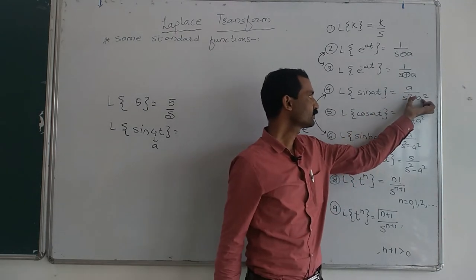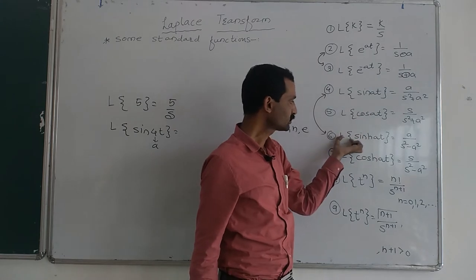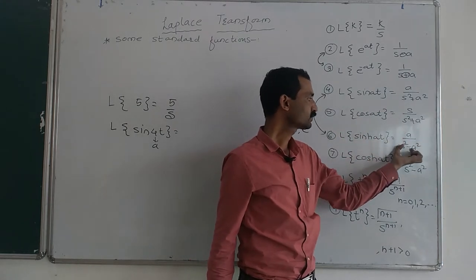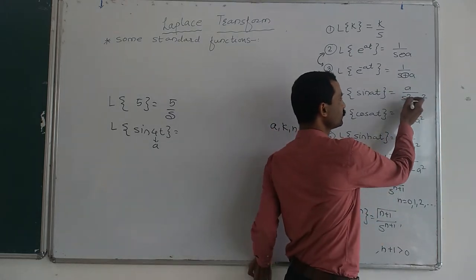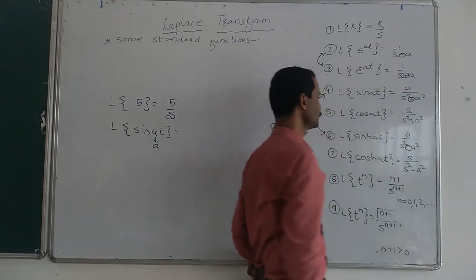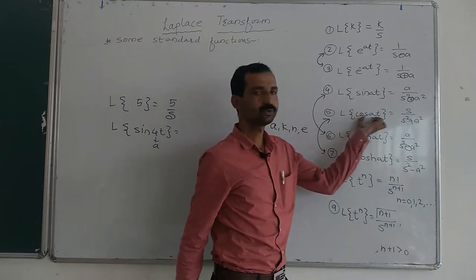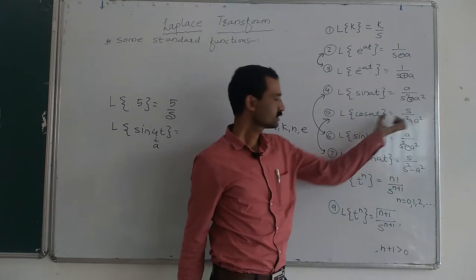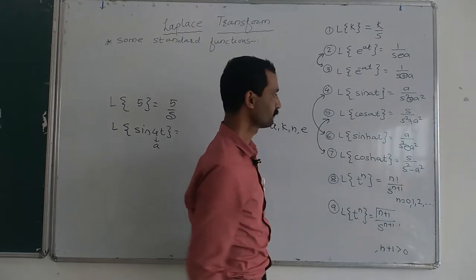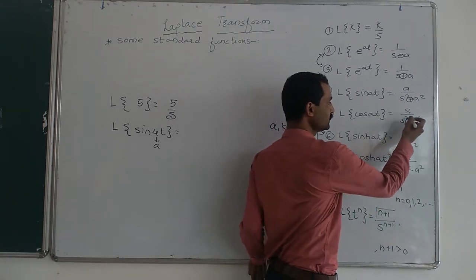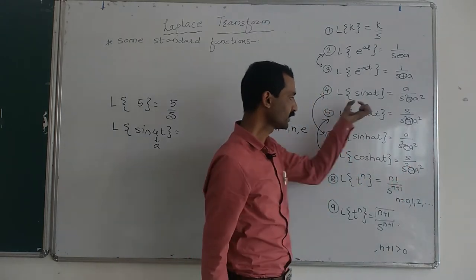Similarly, Laplace of hyperbolic sin(at) is equal to a upon s squared minus a squared. Laplace of hyperbolic cos(at) is equal to s upon s squared minus a squared. The difference between the trigonometric and hyperbolic formulas is only the sign — plus versus minus. This way we can use these formulas.